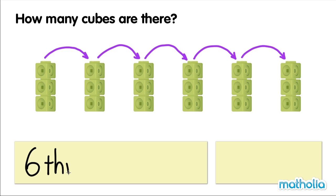Six threes equals eighteen. Six times three equals eighteen.